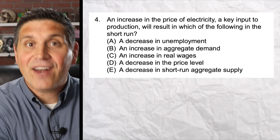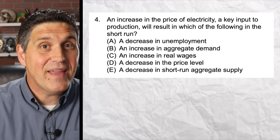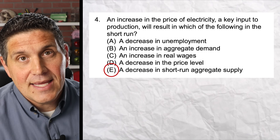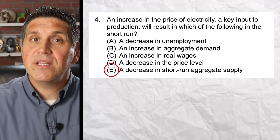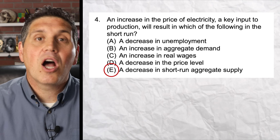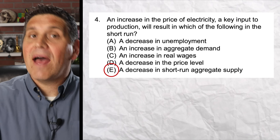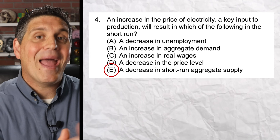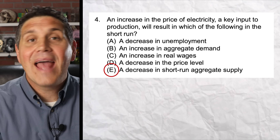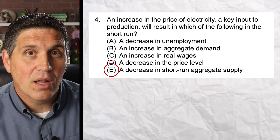Question four is your standard aggregate demand and supply shifting question — you're going to see two or three of these on the AP exam. The right answer is E. If the price of electricity goes up, short-run aggregate supply shifts to the left, causing the price level to go up and output to go down. We get stagflation: price level rises, output falls, unemployment rises, and since prices went up, real wages fall.